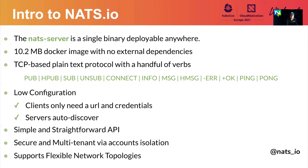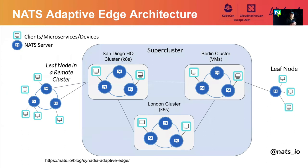NATS has a straightforward API. From the NATS v2 series, it has security and multi-tenant accounts, isolation of subjects and namespaces. It also supports multiple arbitrary network topologies — a very advanced, powerful pattern we call the NATS adaptive edge architecture. You can have a silo of NATS clusters connected to a remote cluster in another data center, expanding into super-cluster setups. Then you can have leaf node connections outside the super cluster or creating a hub-and-spoke topology for a centralized NATS cluster where all clients can still communicate.